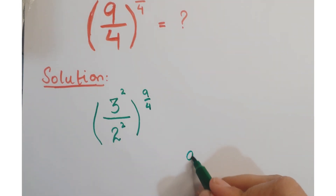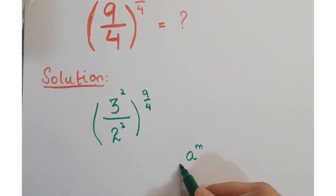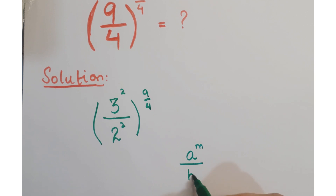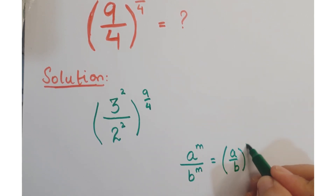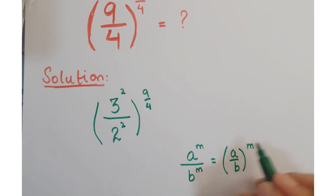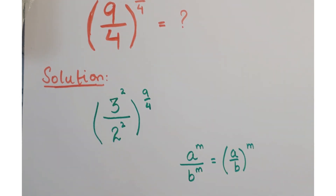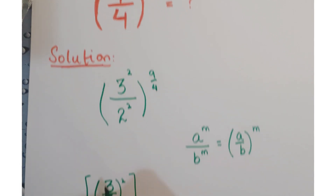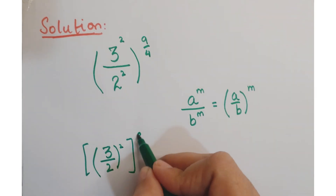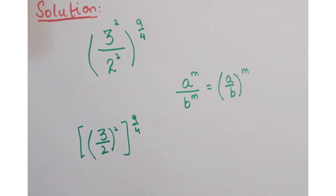As you know, a to the power m upon b to the power m can be written as a upon b whole to the power m. So you can write this as 3 upon 2 whole squared, whole to the power 9 upon 4.